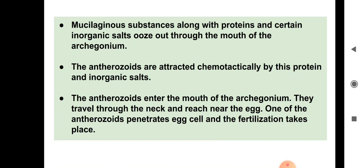At the mouth of the archegonium, mucilaginous substances ooze out along with some proteins and certain inorganic salts. These attract the antherozoids — chemotaxis takes place. The antherozoids are attracted by these proteins and inorganic salts towards the archegonium. The antherozoids enter the mouth of the archegonium, travel through the neck, and reach the egg.